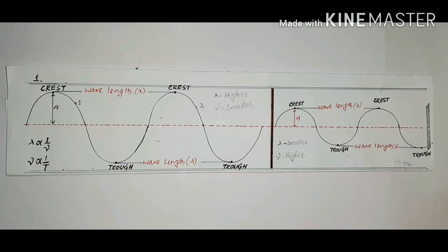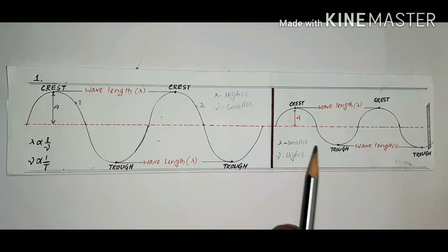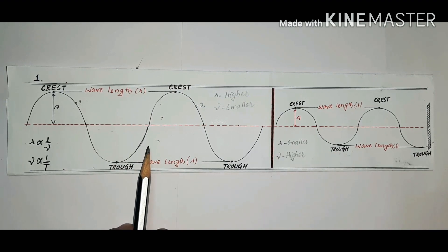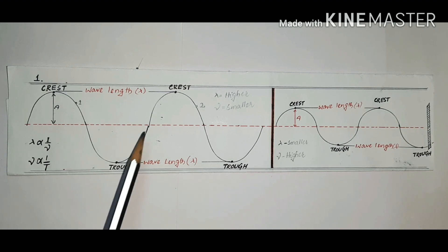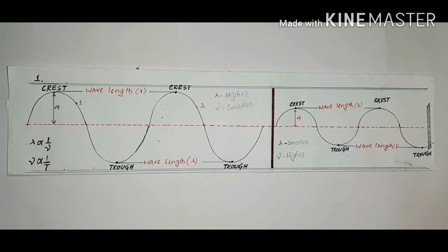We can relate frequency with time period. The wave with more frequency has less time period, and the wave with less frequency has more time period. So they are inversely proportional to each other — as the frequency increases, the time period decreases.